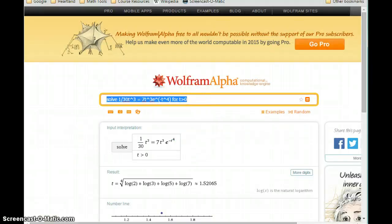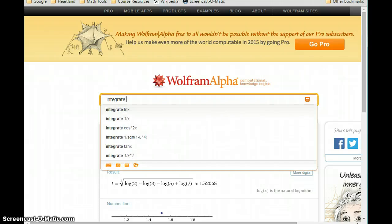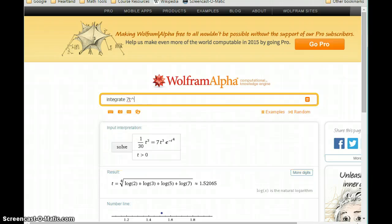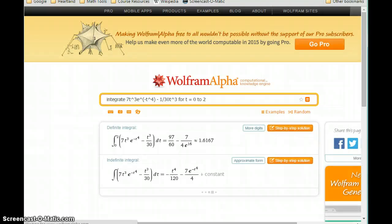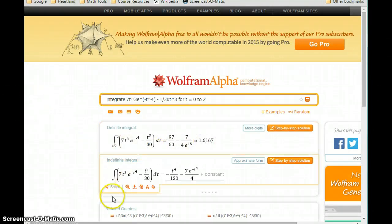What we'll do is integrate 7t cubed times e to the negative t to the fourth minus our marginal cost function for t equals zero to two. In this case, we get a result of 1.6167.